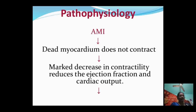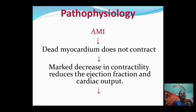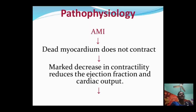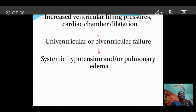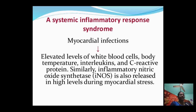In the pathophysiology of cardiogenic shock, due to acute myocardial infarction, dead myocardium does not contract, leading to decreased contractility, reduced ejection fraction, and decreased cardiac output. This causes increased ventricular filling pressure and cardiac chamber dilatation, resulting in univentricular or biventricular failure, systemic hypotension, and pulmonary edema.